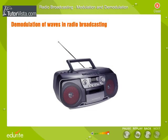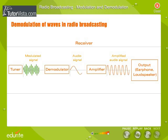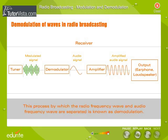Demodulation of waves in radio broadcasting: The process of recovering the audio signal from the modulated wave is known as demodulation or detection. After travelling a long distance, the modulated carrier wave is picked up by the antenna of the receiver. Receiving antennas change it back to the form of electrical signals and feed it to a receiver. Here, the audio frequency signals are separated from the carrier wave. This process by which the radio frequency wave and audio frequency wave are separated is known as demodulation.